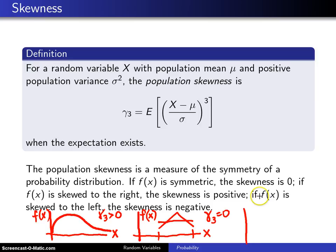And the last case, if f of x is skewed to the left, the skewness is negative. So here is x, here is f of x. And if it looks, for example, like this, that would be a distribution which has a gamma 3 which is less than zero. So the skewness is a measure of symmetry of a probability distribution.